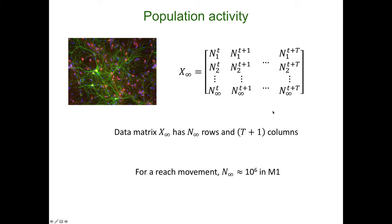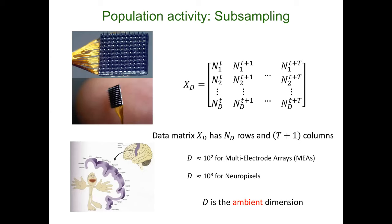If we had that data, we would organize it in a matrix I call X-infinity, where every row corresponds to a neuron and each column corresponds to a discrete time index running from time zero to time T. In practice, we implant multi-electrode arrays in the area of interest — here the arm area within primary motor cortex — and we only record from D neurons, getting a matrix with the same structure but only D rows, one for each recorded neuron.